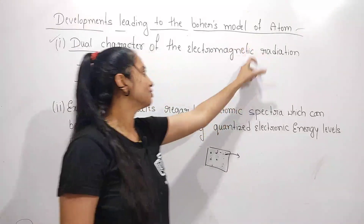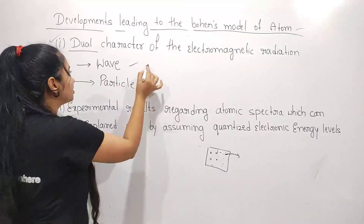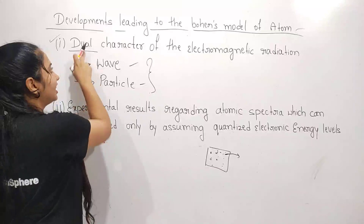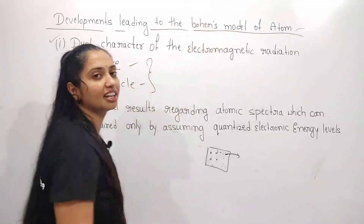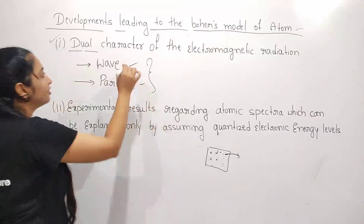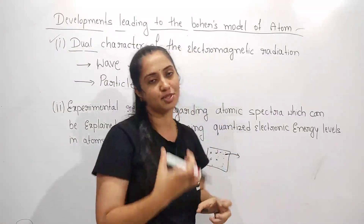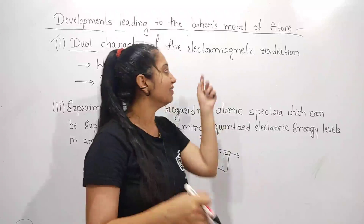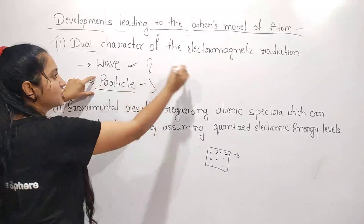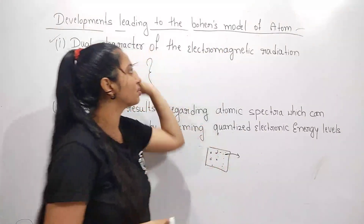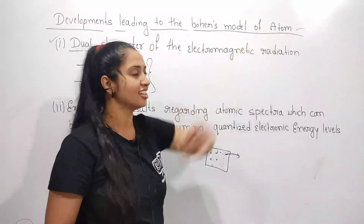These electromagnetic radiations behave as a wave and also as a particle — this double character of electromagnetic radiations leads to explaining Bohr's model of an atom. How the wave character and particle character of electromagnetic radiations help to lead Bohr's model of an atom will be discussed in the next class.